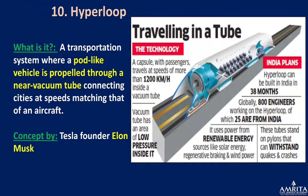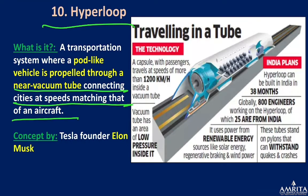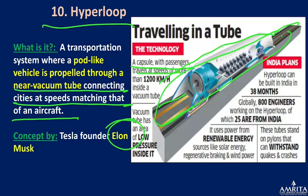Hyperloop is a transportation system where pod-like vehicles are propelled through near-vacuum tubes connecting cities at speeds matching that of aircraft. Envisaged by Tesla founder Elon Musk, the capsule travels inside a vacuum tube under low pressure. There are plans to build a hyperloop in India in approximately 38 months.